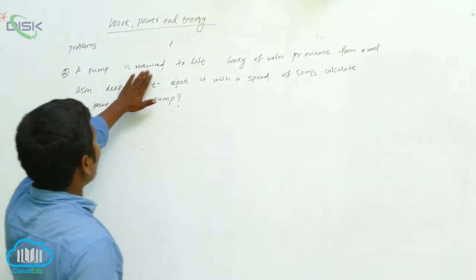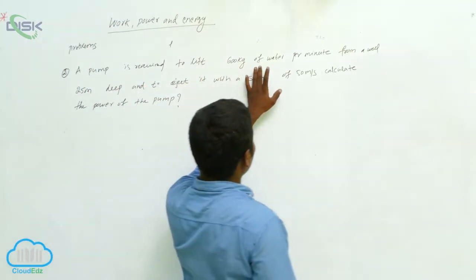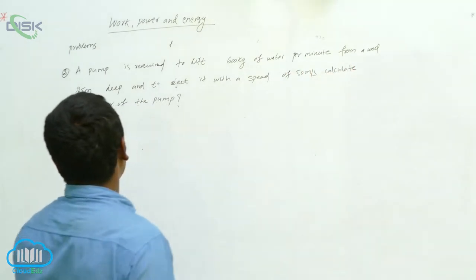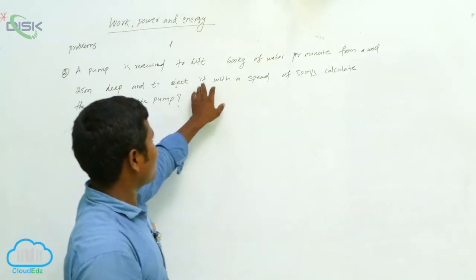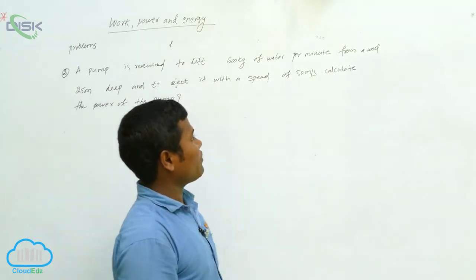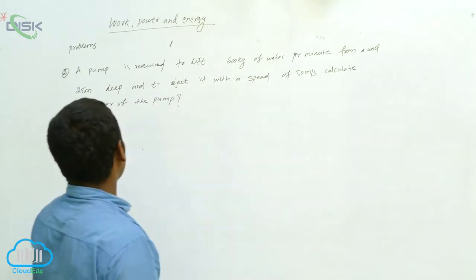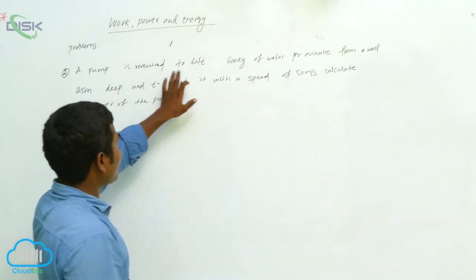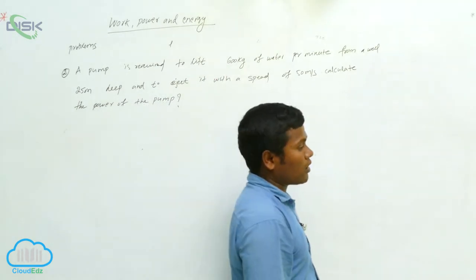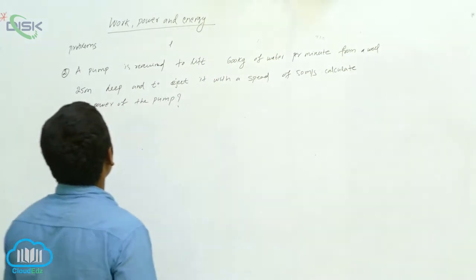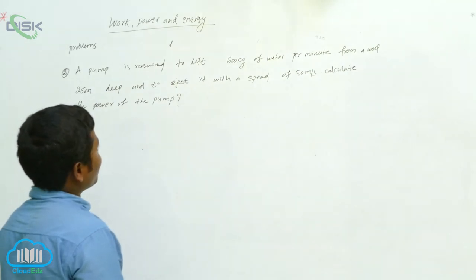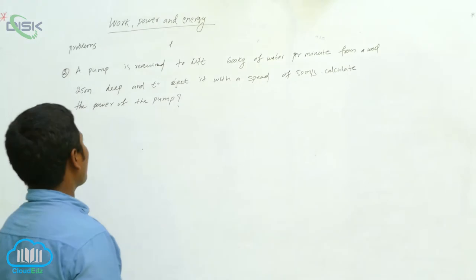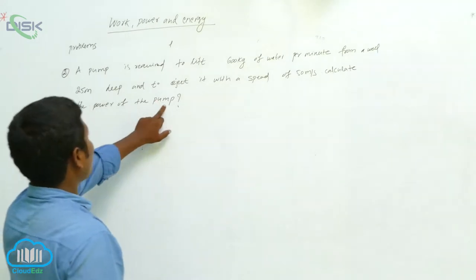A pump is required to lift 600 kg of water per minute from a well 25 meters deep and to eject it with a speed of 50 meters per second. Calculate the power of the pump.